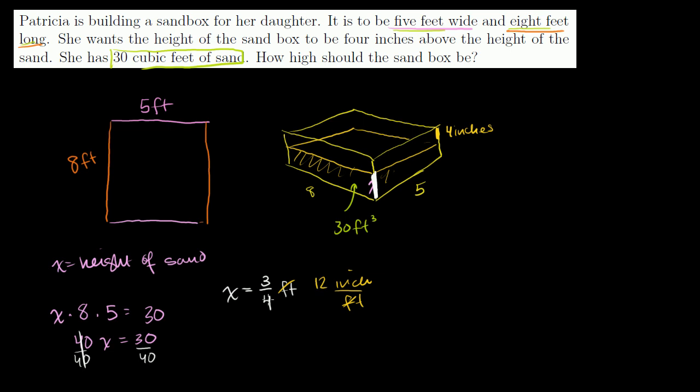The feet cancel out. 12 times 3 over 4 is what? You can divide 12 by 4 and get a 3. Divide the 4 by 4 and you get a 1. You get 3 times 3. This is 9 inches.